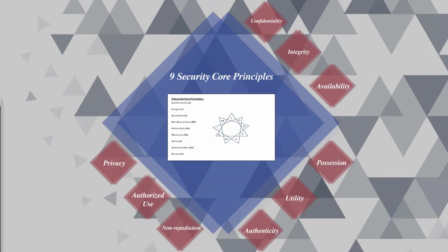Displaying the nine core security principles in the form of a star provides a more detailed understanding of how technologies align to the principles protecting the organization's goals. This visual representation allows security professionals to understand what technologies are available and how they can be used to mitigate risks in regards to the identified core security principle.